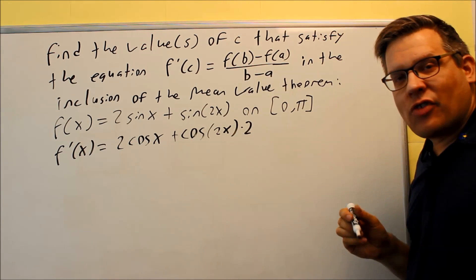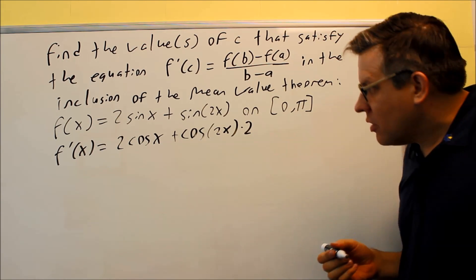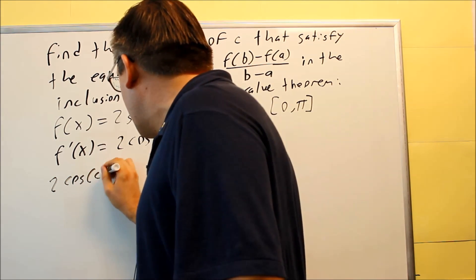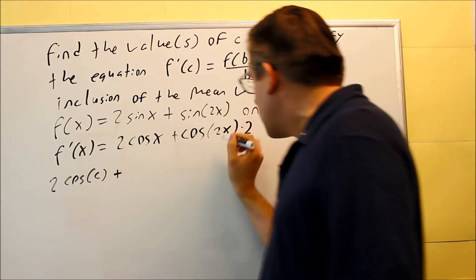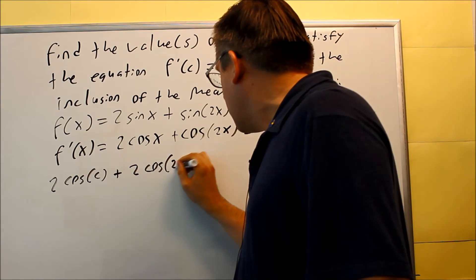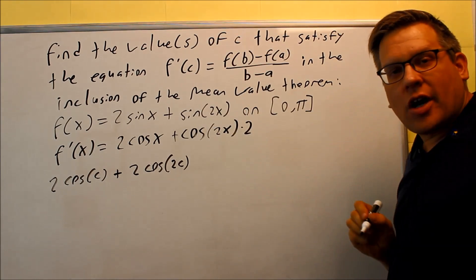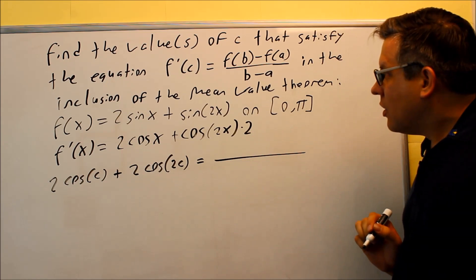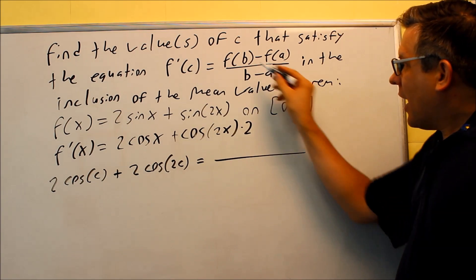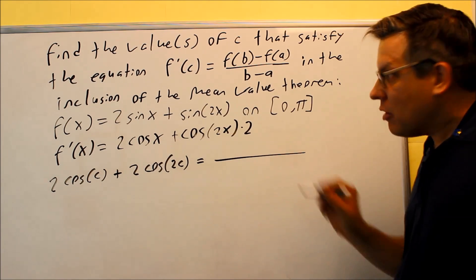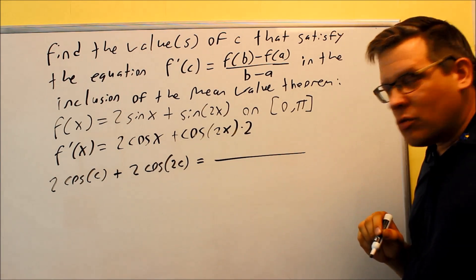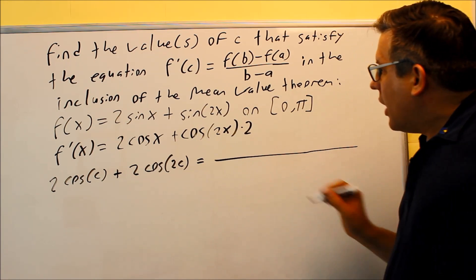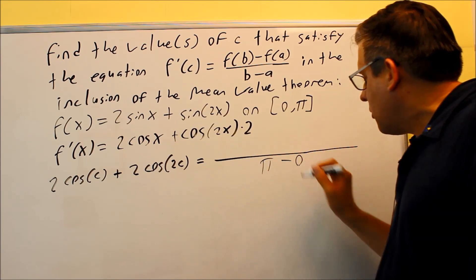We should be able to find a c that satisfies this, so this is what we're going to do next. We put in f'(c): we're going to do 2cos(c) + 2cos(2c). That's the left-hand side of the formula, f'(c). Now, we're going to do the right-hand side: f(b) - f(a). We want to find f evaluated at π minus f evaluated at 0. On the bottom, I have b minus a, that's π minus 0.